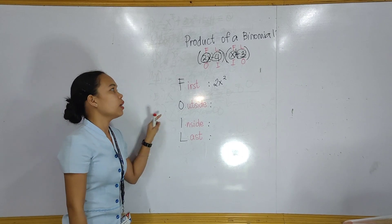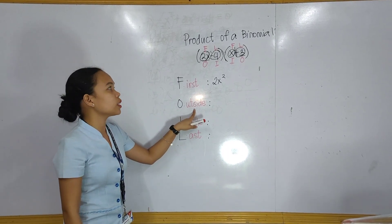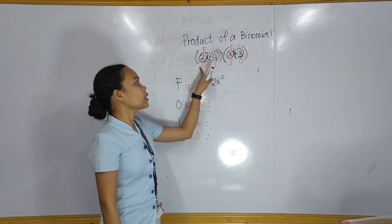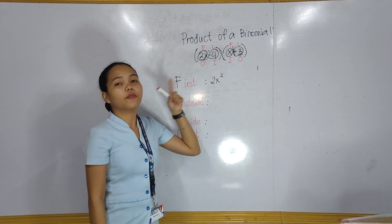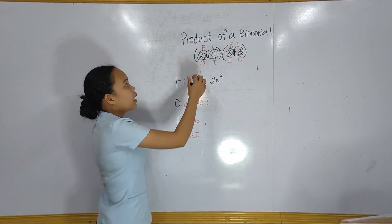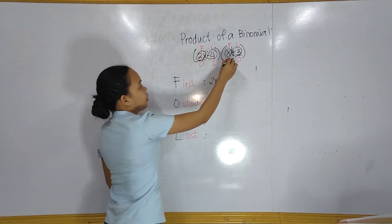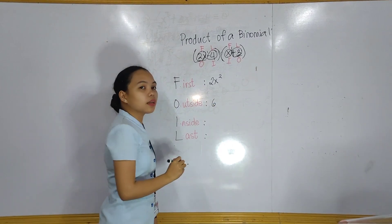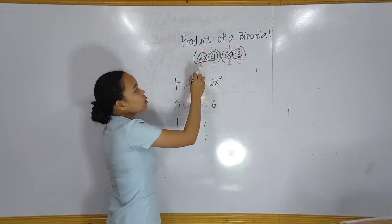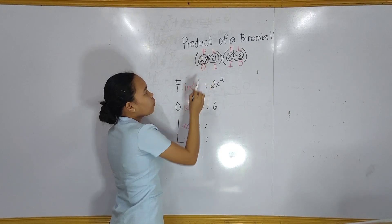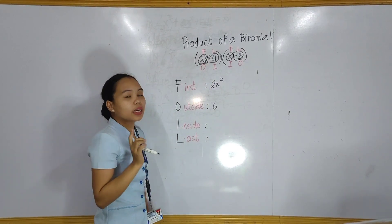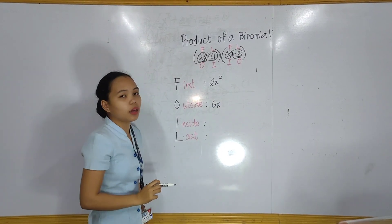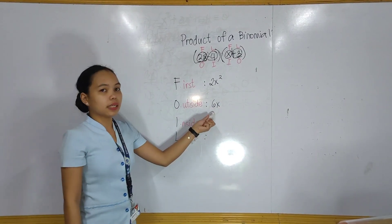Next, we will multiply the Outside terms. The outside terms are 2x and positive 3. So 2x times positive 3: we first multiply the numbers, 2 times 3 equals 6. Since we have only one x, we copy x. So 2x times 3 gives us 6x.